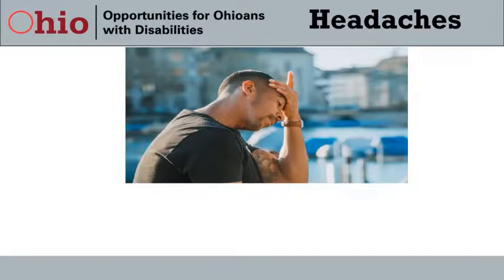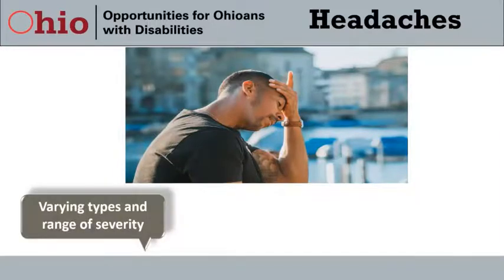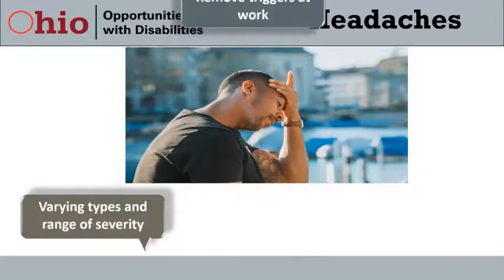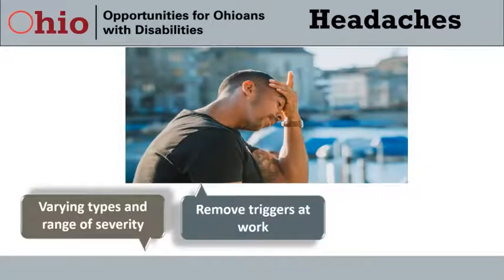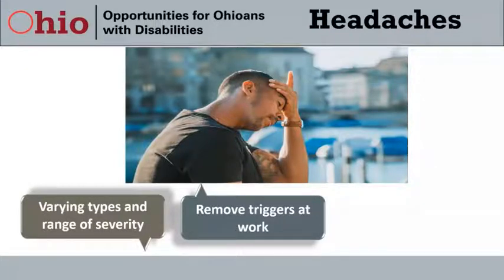For employees experiencing headaches, there are varying types with a range of symptoms. Ideas include removing triggers in the workplace like light — reducing glare, eliminating overhead lighting, and supplementing with desk lamps or natural light. If triggers at work cannot be eliminated, another option could be to permit the employee to telework if the essential functions of the job can be performed remotely.